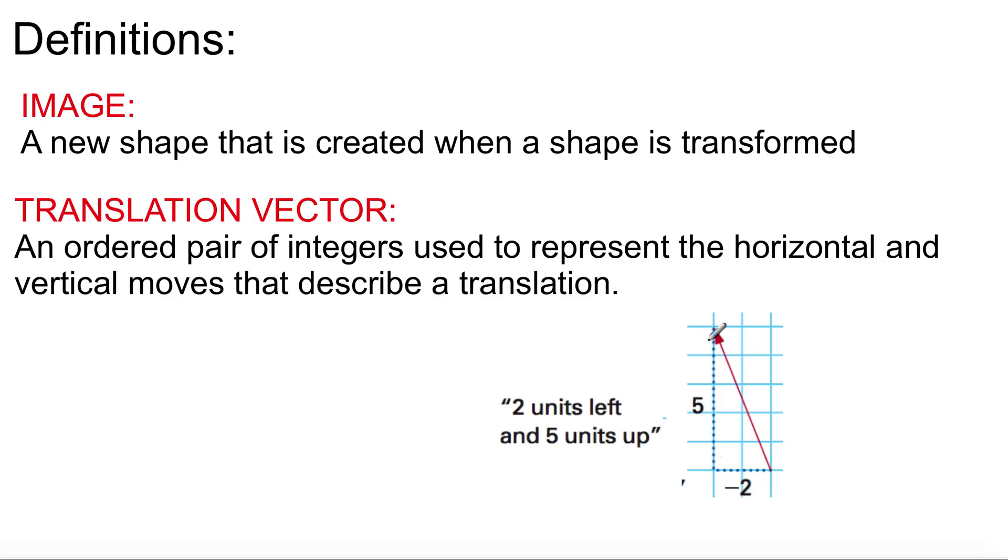You're going up. Up is positive. So your translation vector will be written like this. Square brackets, negative 2 to the left, and up 5. Easy enough, simple stuff.